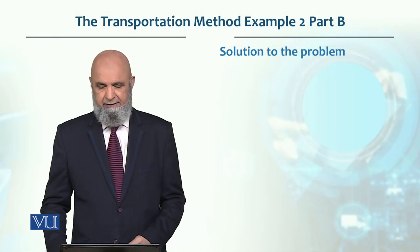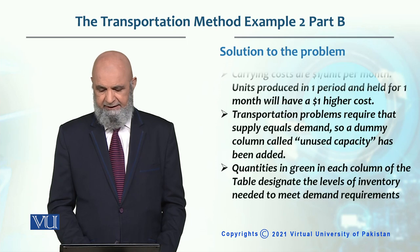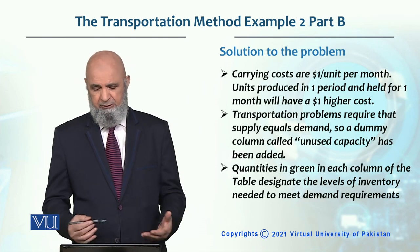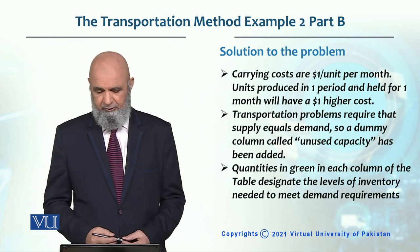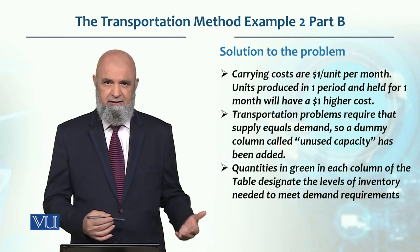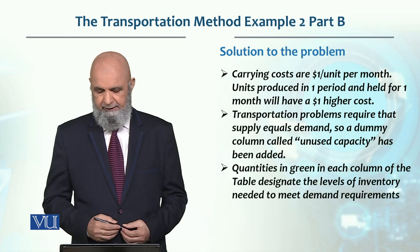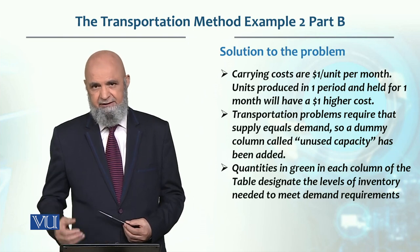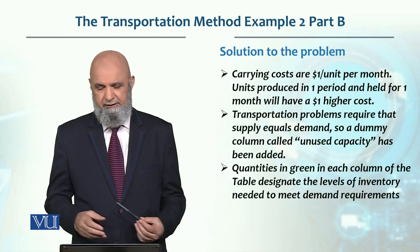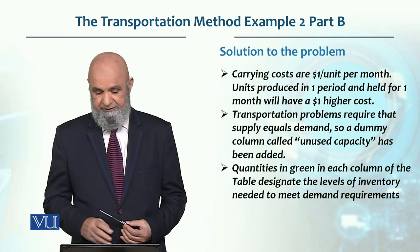The solution of this second problem: in the problem statement, $1 per unit carrying cost is given. This is a transportation problem again. For unused capacity, we have created a dummy column — a dummy variable — with values where cost is zero. This is just a requirement for this method; there is no cost.